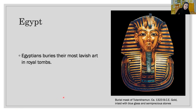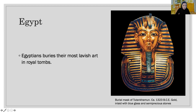Egyptians buried their most lavish art in royal tombs. The rulers were sent into eternity outfitted with everything they would need to continue life in the sumptuous style they had known on earth — such as furniture, jewelry, chariots, clothing, and artifacts of all kinds. They believed their life was going to continue after death. We will continue to see the prehistoric and ancient Mediterranean world in the next class.